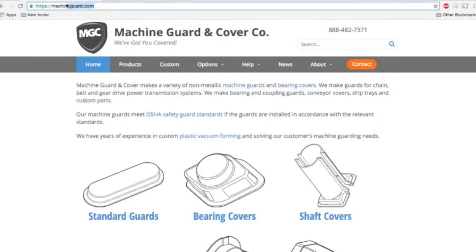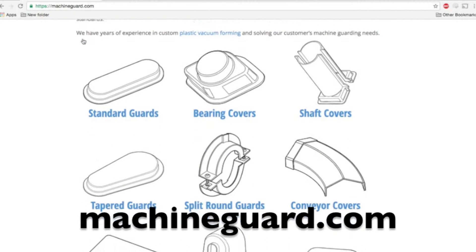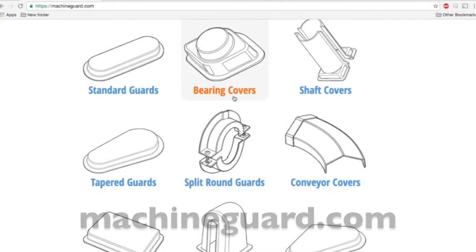To collect the proper measurements for a flanged bearing cover, first visit machineguard.com and when on the home page, click the illustration of a bearing cover.